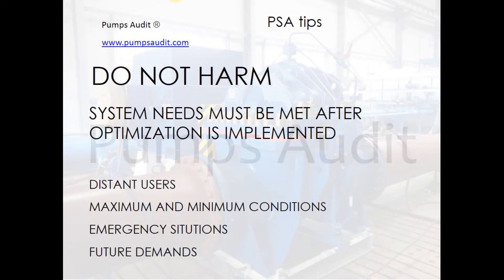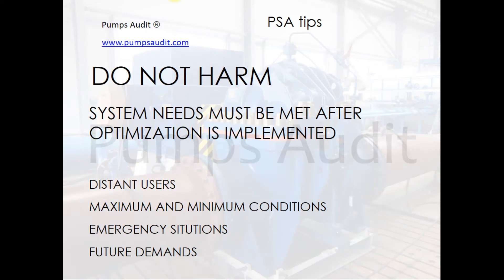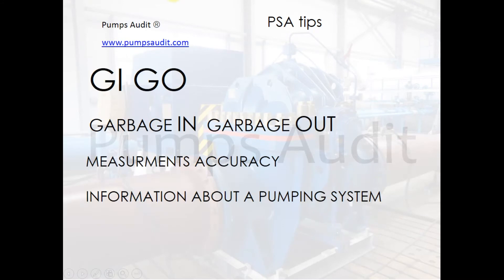The pumping system should provide the necessary flow of fluid to every consumer, including distant ones. Remember about possible emergency situations — for example, when one pump breaks down, it should not influence the operation of the process. It can also be a situation where the pumping system will have to provide more users in the future, and this must be taken into account.